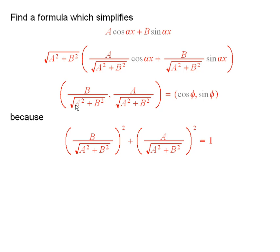Why? Because this ordered pair is a point on the unit circle. The way I know that is when I take the sum of the squares, I get 1.